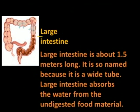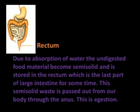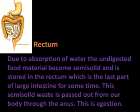The large intestine is about 1.5 meters long. It is so named because it is a wide tube. The large intestine absorbs water from the undigested food material. Due to the absorption of water, the undigested food material becomes semi-solid and is stored in the rectum, which is the last part of the large intestine, for some time. This semi-solid waste is then passed out from the body through the anus.